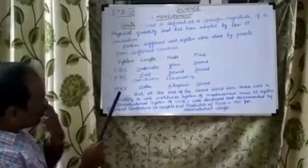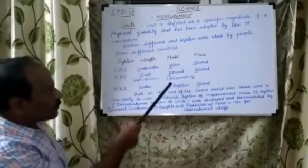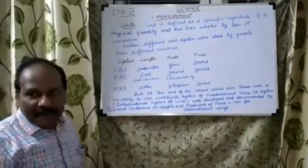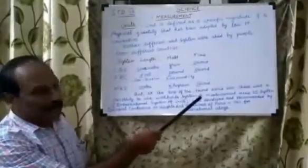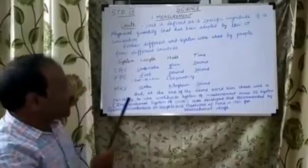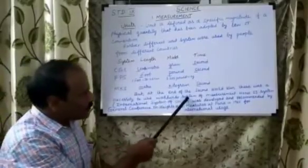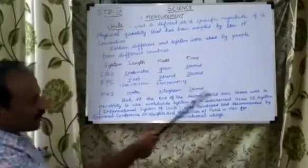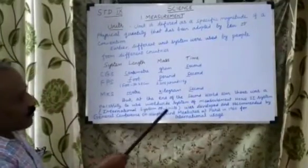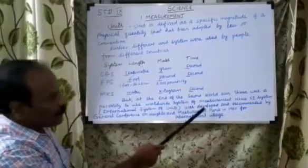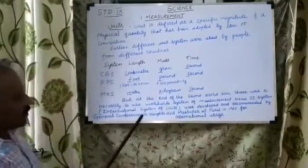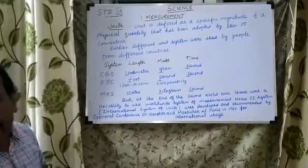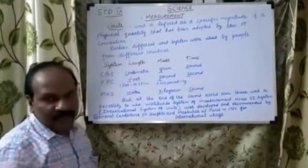In the MKS system, length is measured in meter, mass is measured in kilogram, and time is measured in second. But at the end of the Second World War, there was a necessity to use a worldwide system of measurement. Hence, the SI system — whose full form is International System of Units — was developed and recommended by the General Conference on Weights and Measurements at Paris in 1960 for international usage.